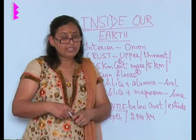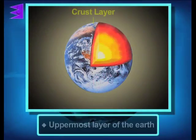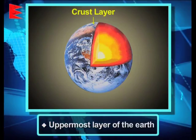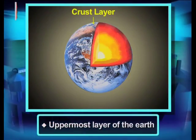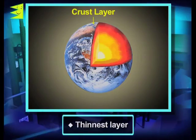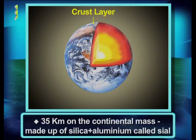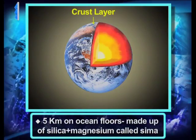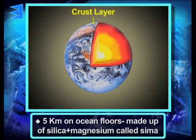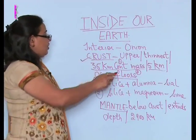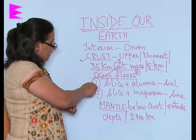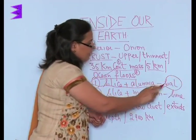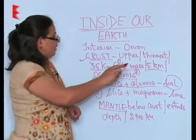The first layer of the earth is called the crust. The crust is the uppermost layer of the earth — the first layer you get when you dig. This is the thinnest of all layers: only 35 kilometers on the continental mass and just 5 kilometers on the ocean floors. The crust on the continental mass is made up of silica and alumina, and is therefore also termed SIAL.